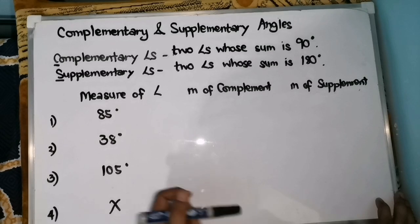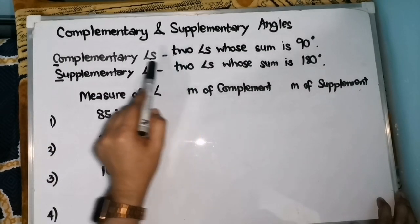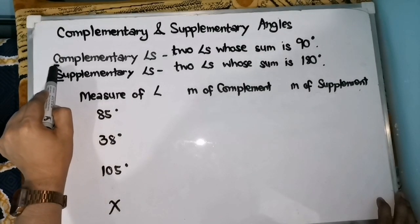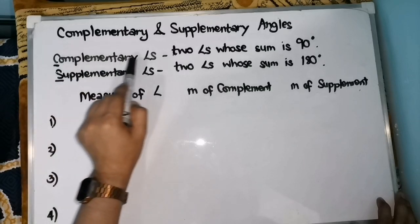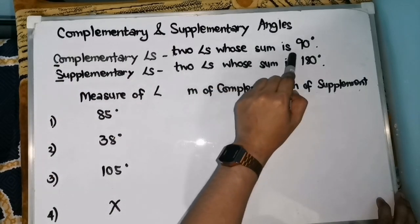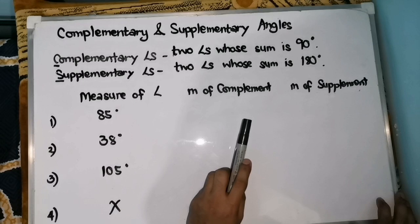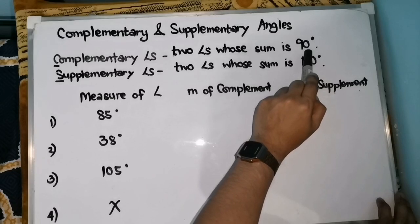Let's have the definition. Complementary angles — its initial letter is 'C', which stands for 'corner', meaning it is a right angle. When we say complementary angles, two angles whose sum is 90 degrees. Meaning, when you add the two given angles, the sum or result should be exactly 90 degrees.